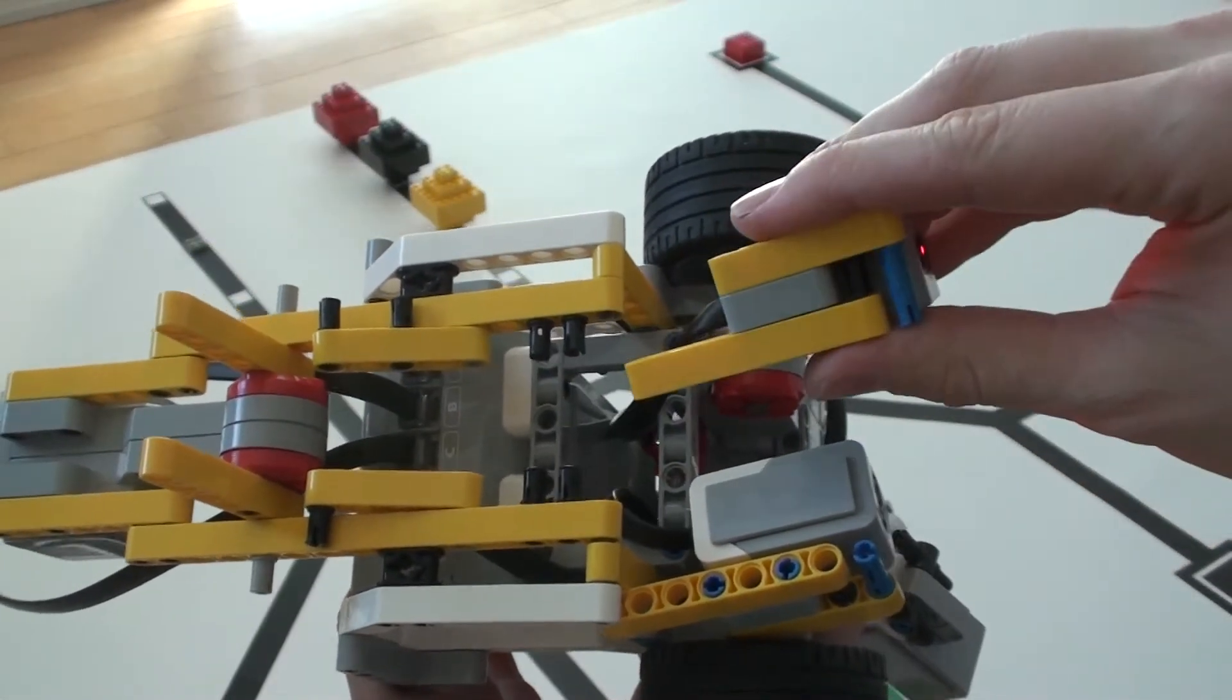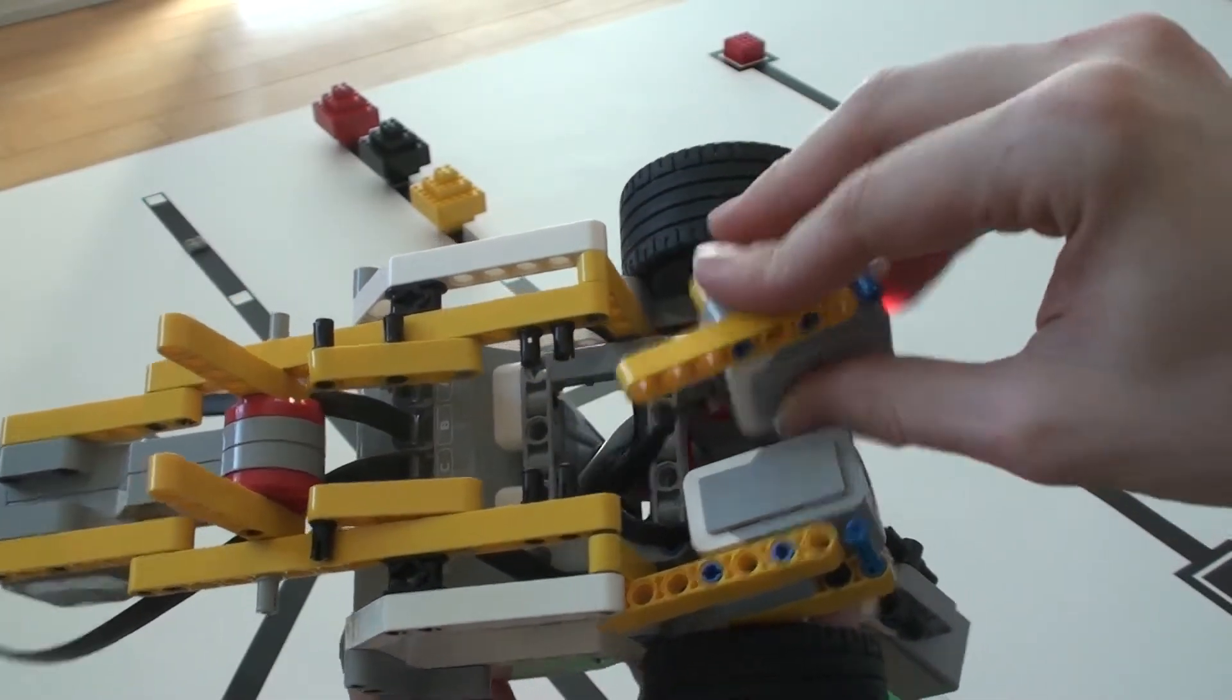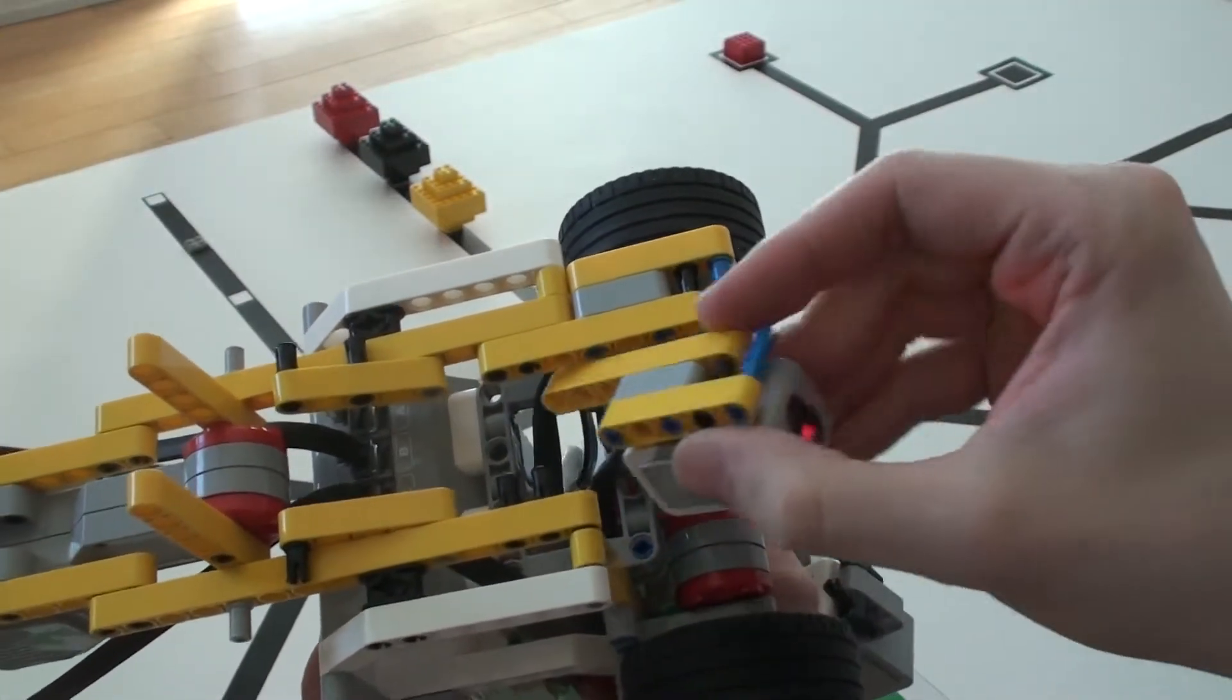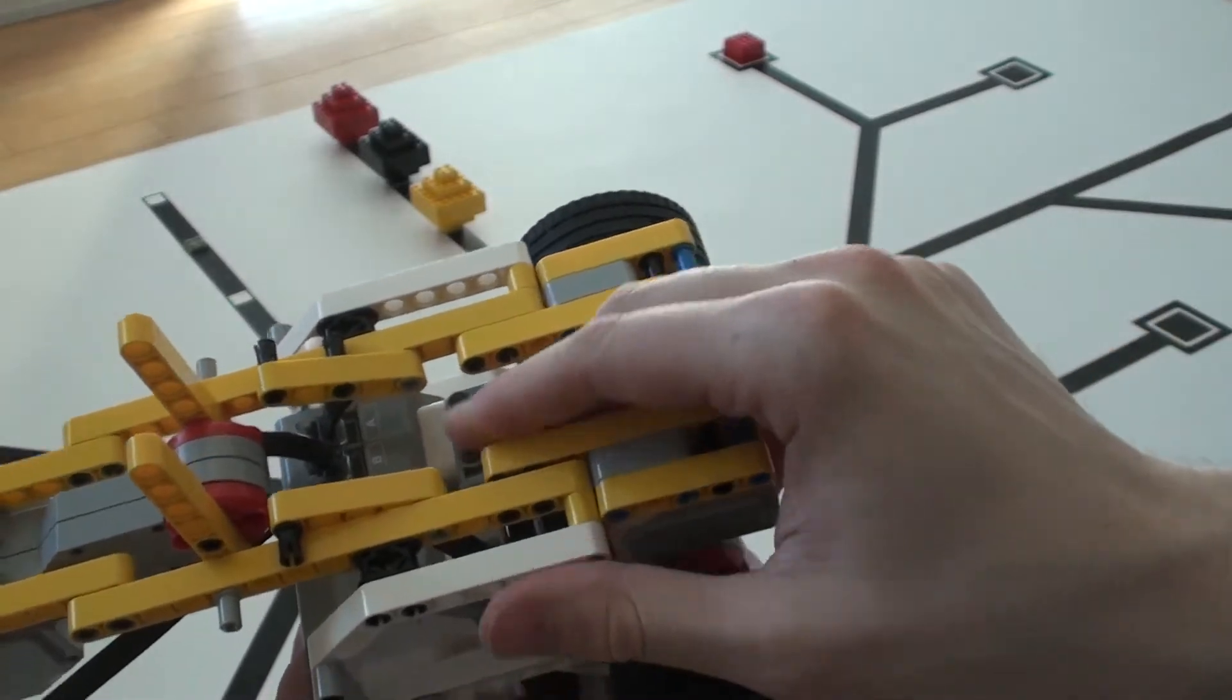Once you've attached the frame with the axle motor, you can attach the sensors in the front. This one goes on sensor port one and simply connects like this. The one on the other side connects to port number four and similarly connects like that.